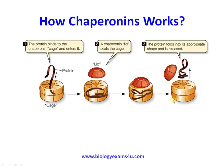Once the protein is fully folded inside the chaperonin cage, it is released to the outside and becomes functional. The chaperonin helps the protein fold independently without disturbance from other proteins inside the cell.